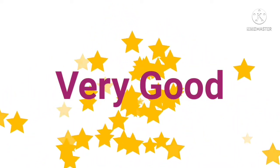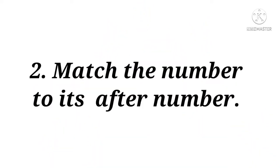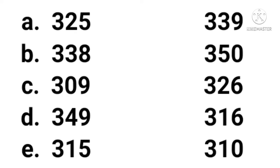Very good, children. Now the second activity: match the number to its after number. The very first number is three hundred and twenty-five. What comes after three hundred and twenty-five? Three hundred and twenty-six.